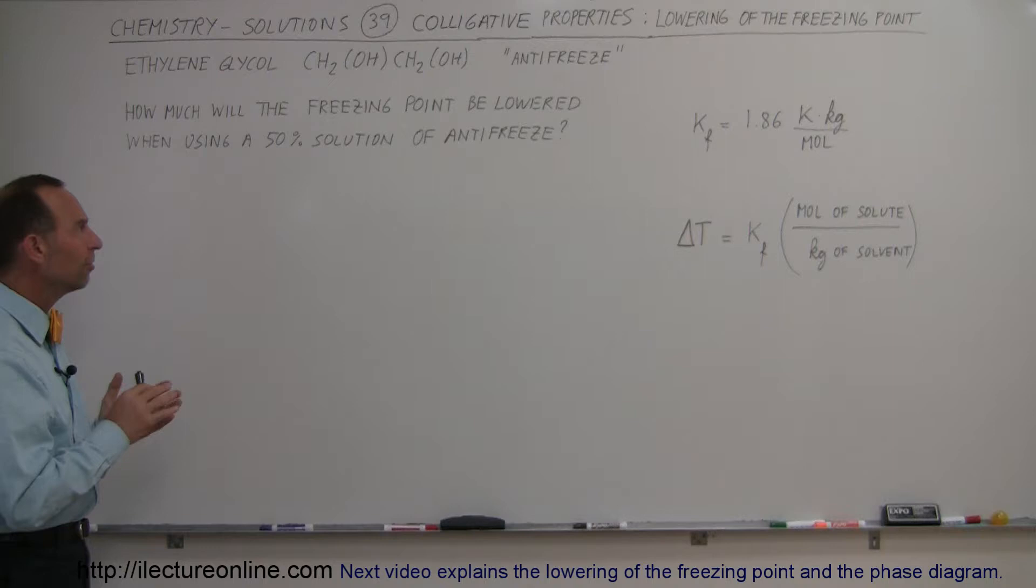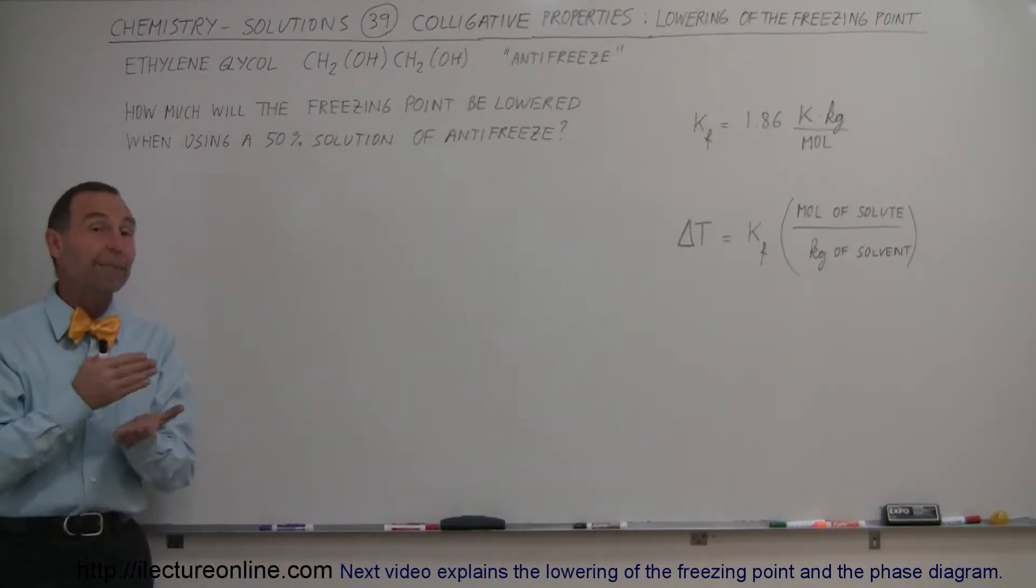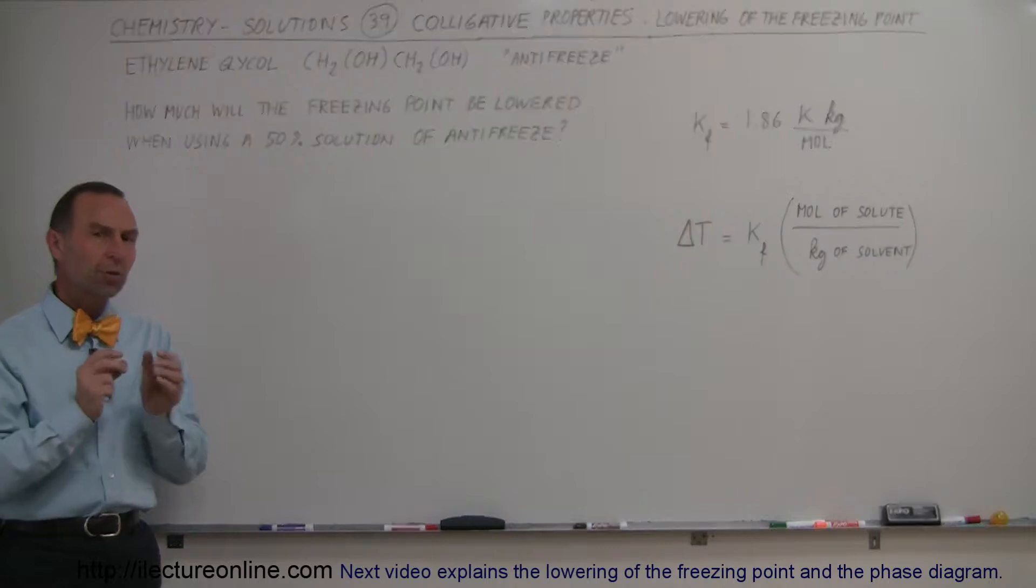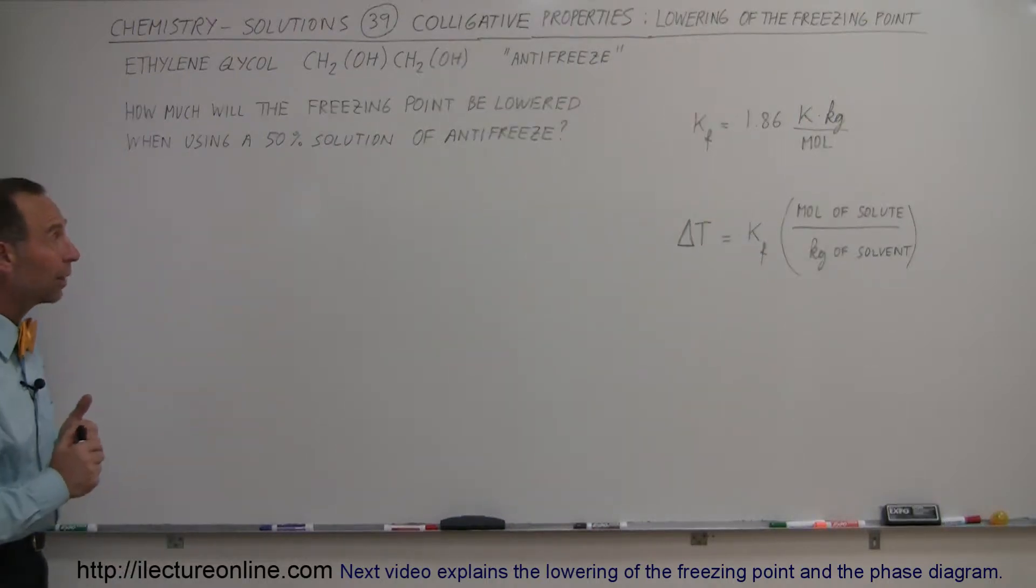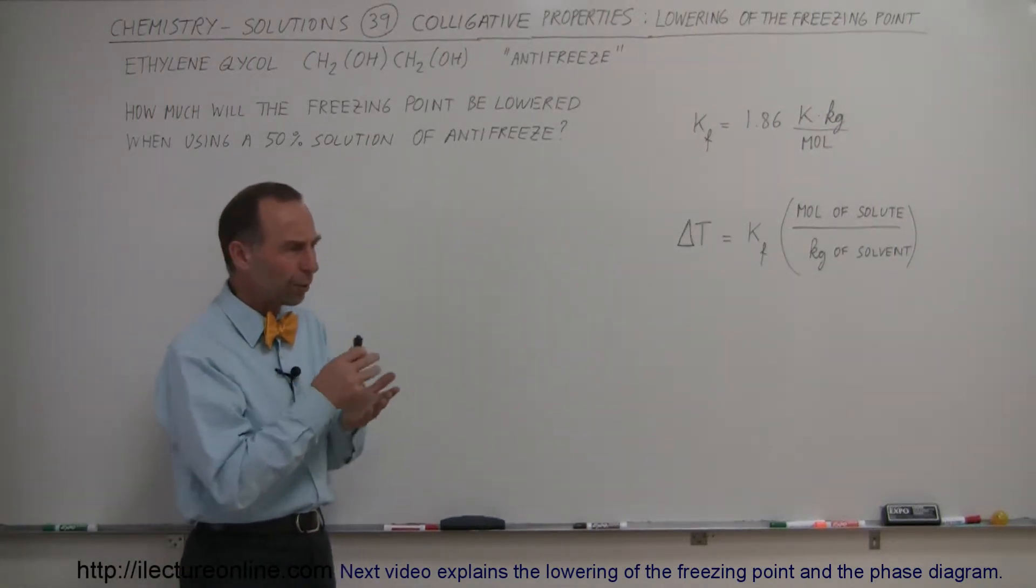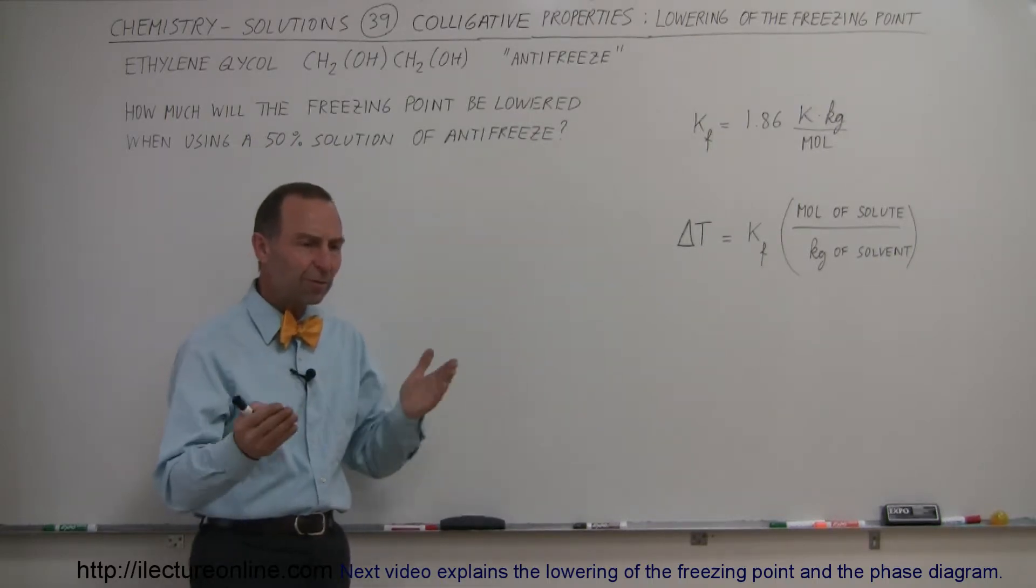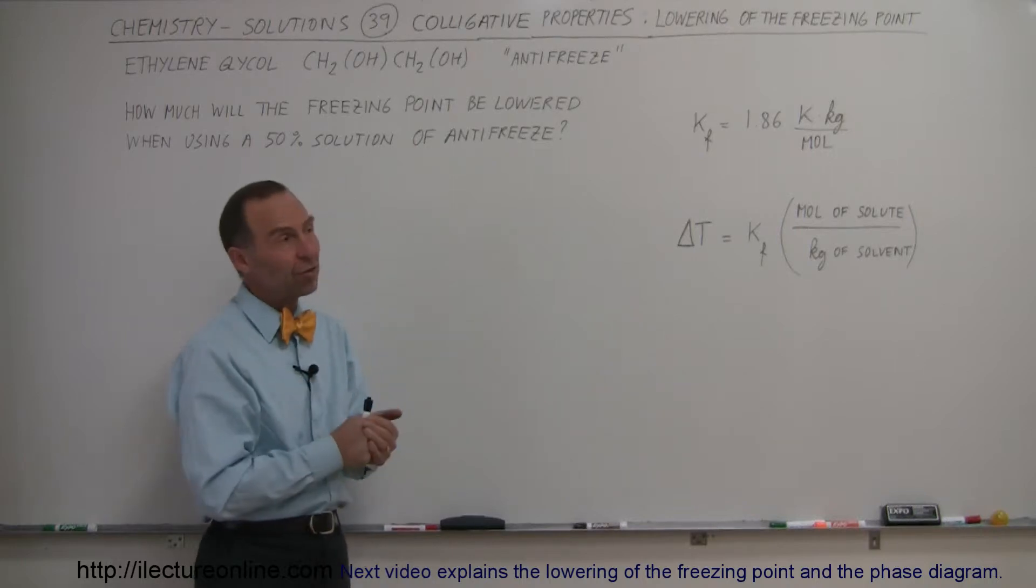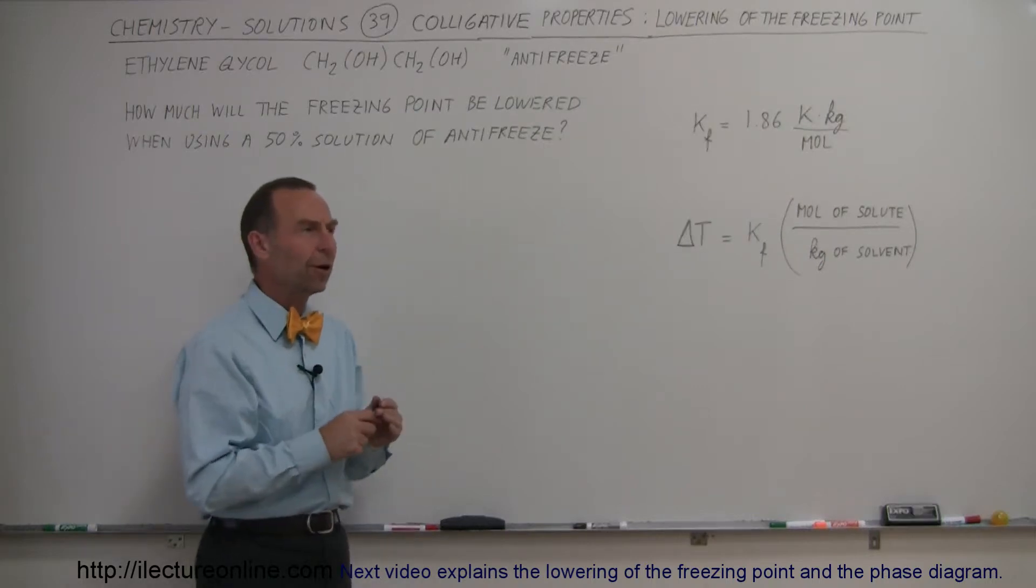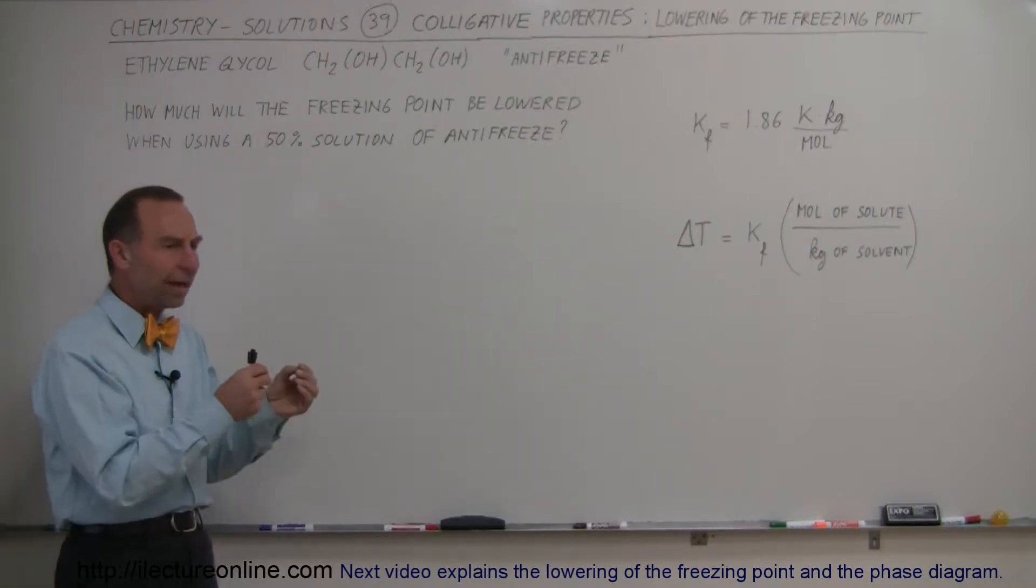A 50-50% solution may mean two different things. It could mean 50% by mass or 50% by volume. Typically, they use 50% by volume, which throws it off a little bit. Let me show you how we can deal with that. Since the density of antifreeze is about 1.11 grams per liter, that means by mass, if you have a 50-50% solution in volume, you have about a 55% solution of antifreeze to water. So about 55% antifreeze and 45% water by mass.